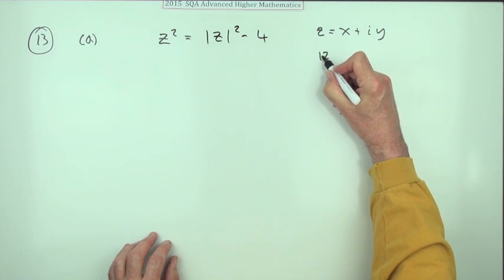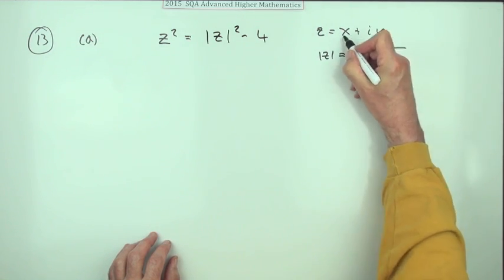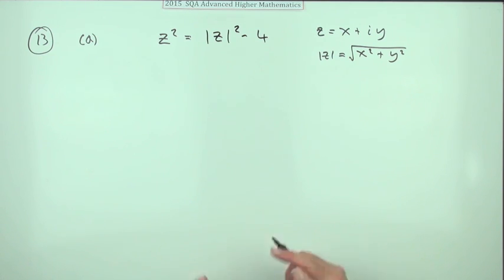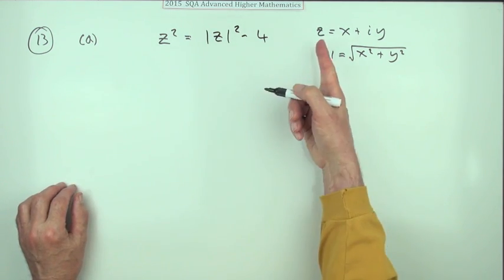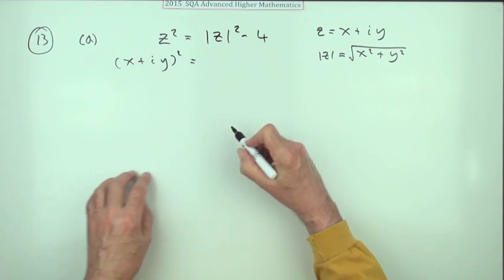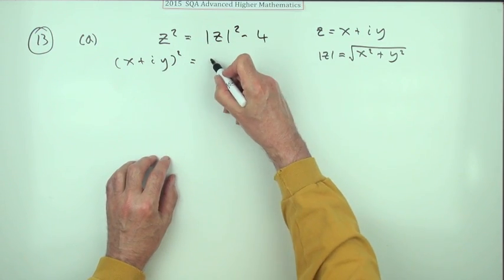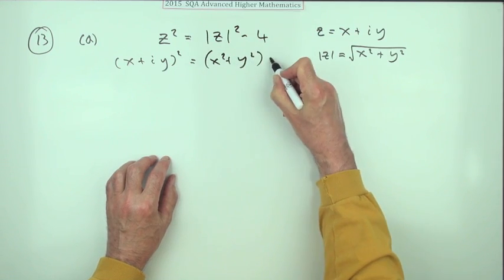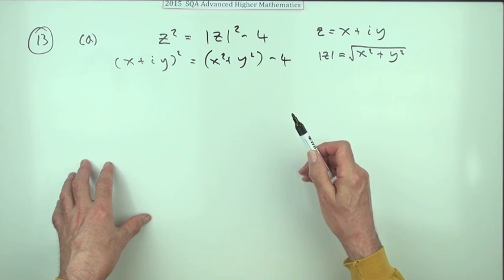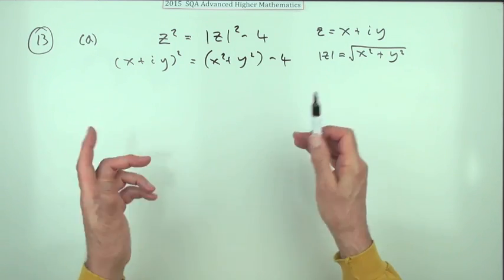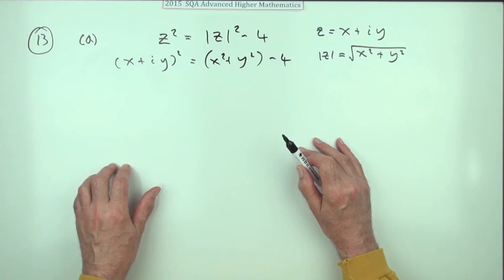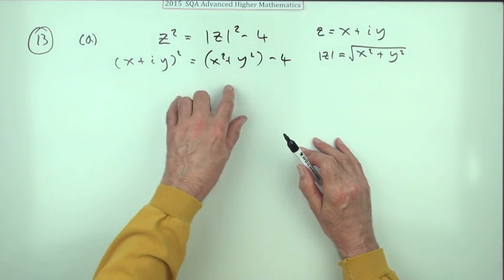The modulus of a complex number is given by the square root of the two components squared: x squared plus y squared. Ready to feed that in — if z is this, then you've got x plus iy squared, which gives you x squared plus y squared minus 4. That's exactly where the first mark goes, because the marking scheme says writing in the form x plus iy, with either the left or right hand side correct.